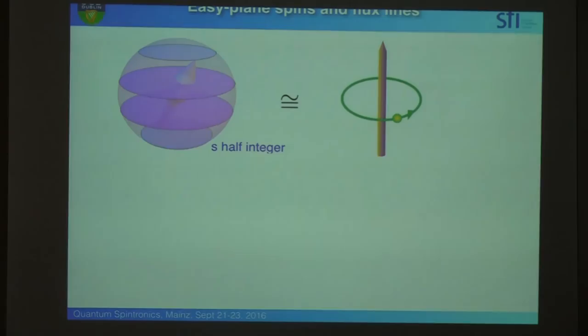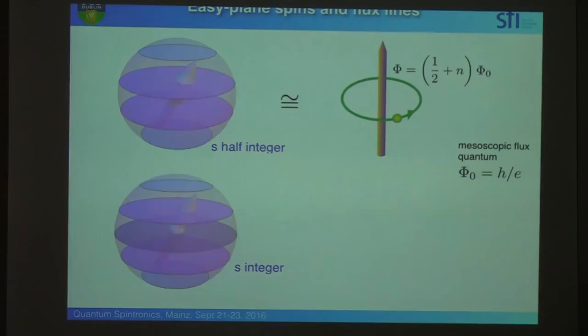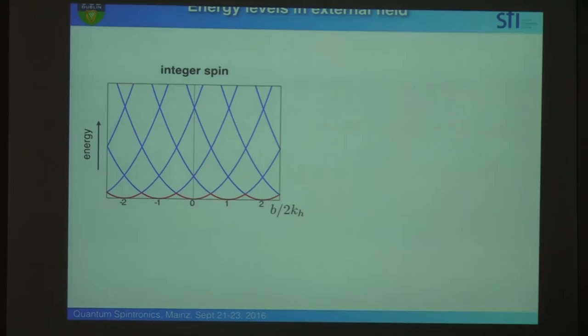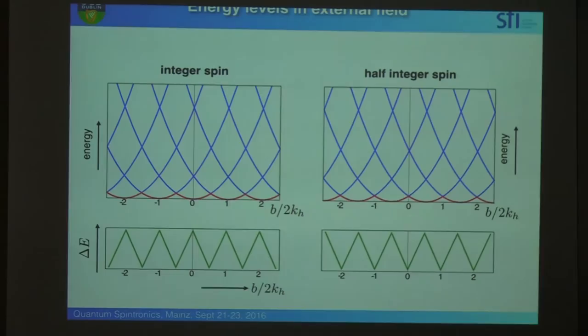And that analogy to the flux through the charge orbiting the flux quantum is such that a half integer spin corresponds to a charge orbiting a flux line which has half integer flux, and integer flux. So that's now theory, and now experiments in the last three minutes. So actually, if you tune this with the external field, you get the usual physics, sawtooth dependence, different for half integer spin and integer spin.